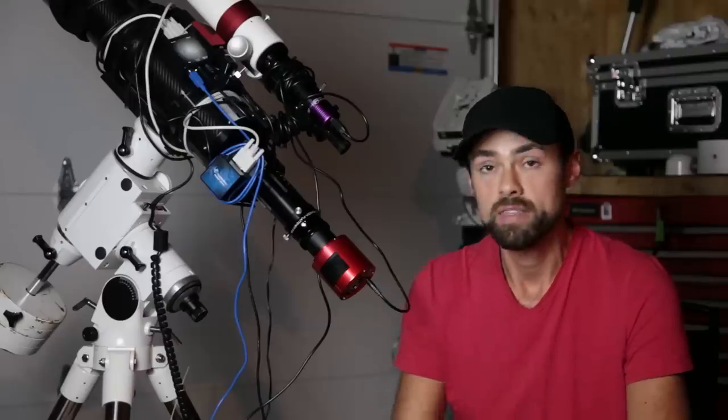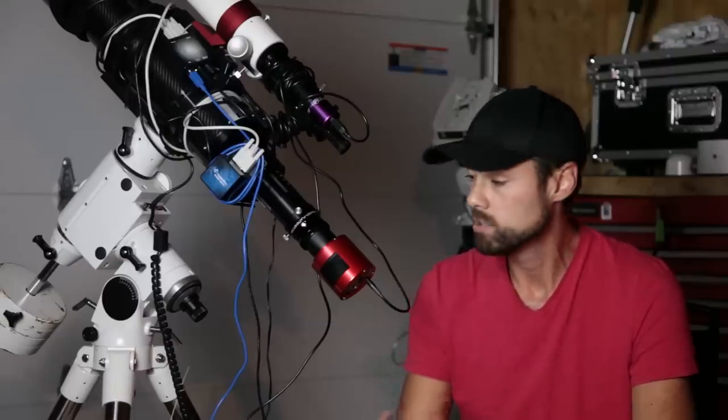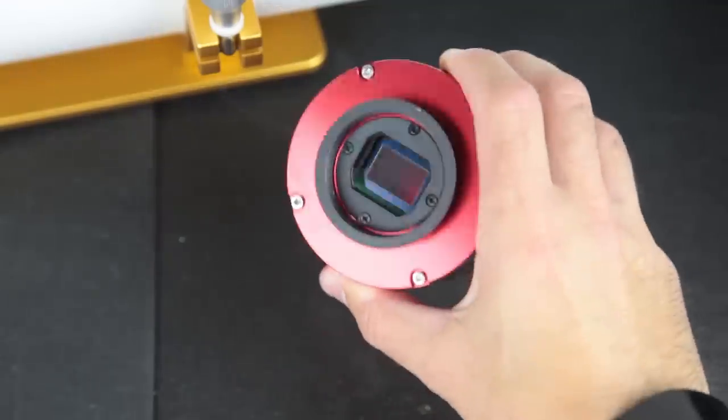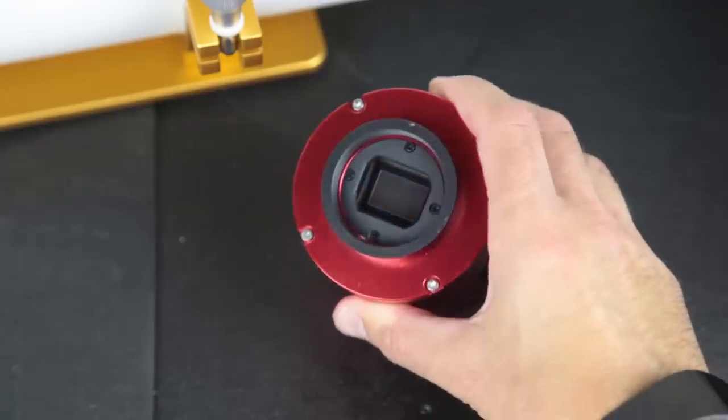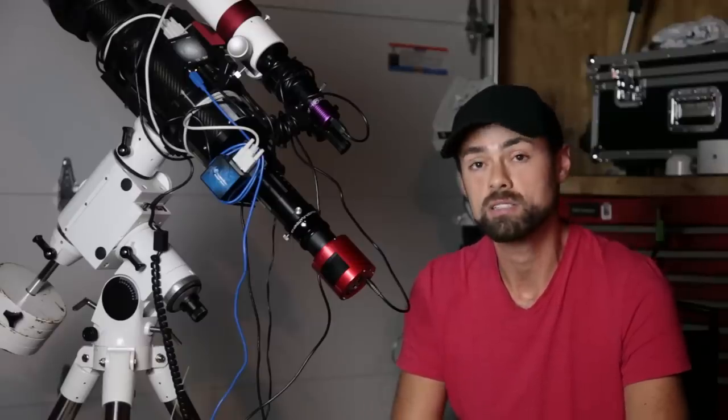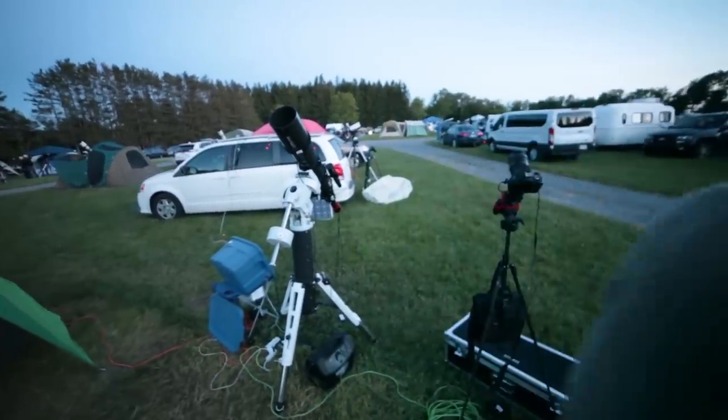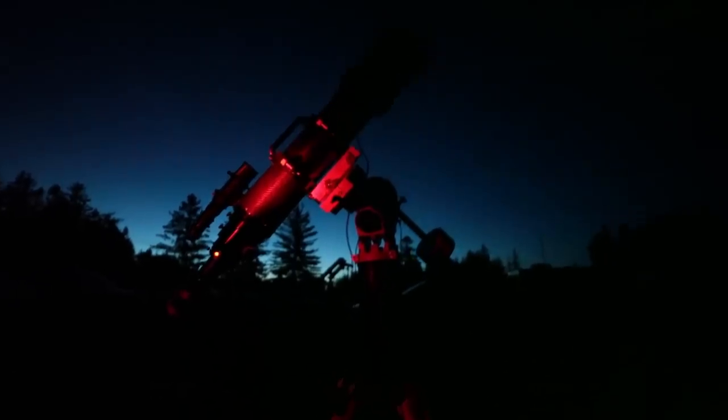If you haven't already seen it in a number of videos that I've shot, the 294MC Pro is a one-shot color dedicated astronomy camera. This camera was lent to me from Ontario Telescope and Accessories for review.